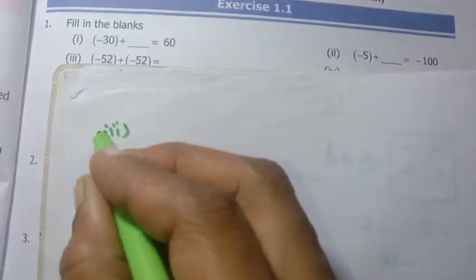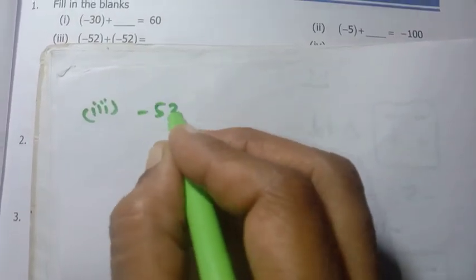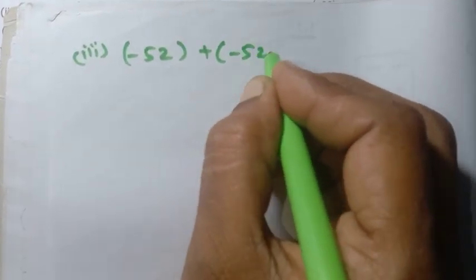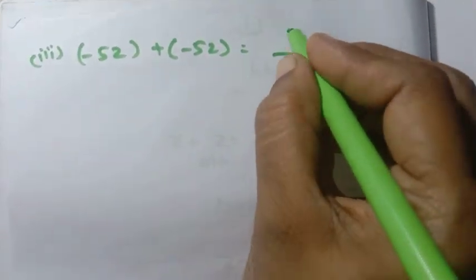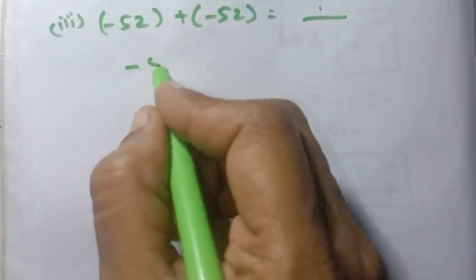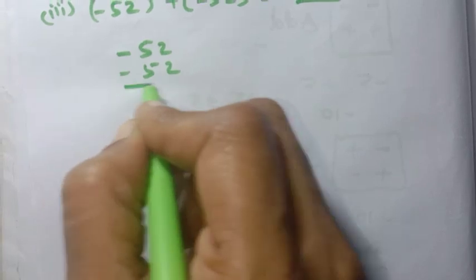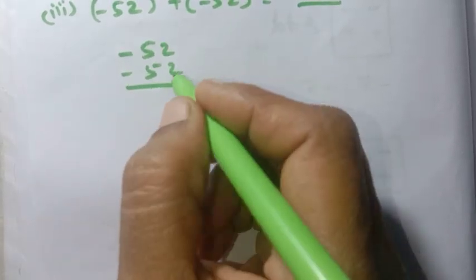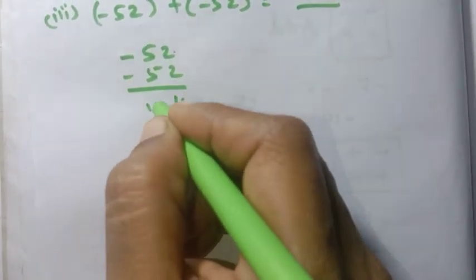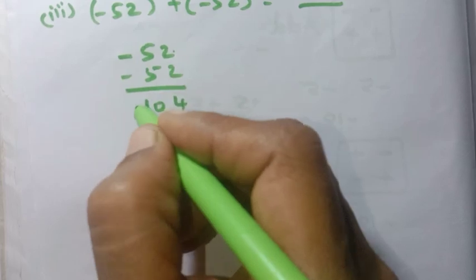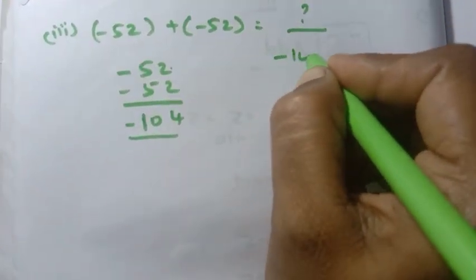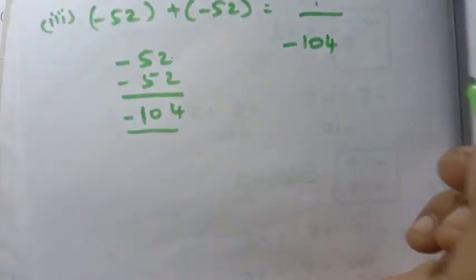Third sum: minus 52 plus minus 52. Same symbol — both minus 52. Same sign, so we add: 52 plus 52 equals 104. Keep the same sign, so the answer is minus 104.